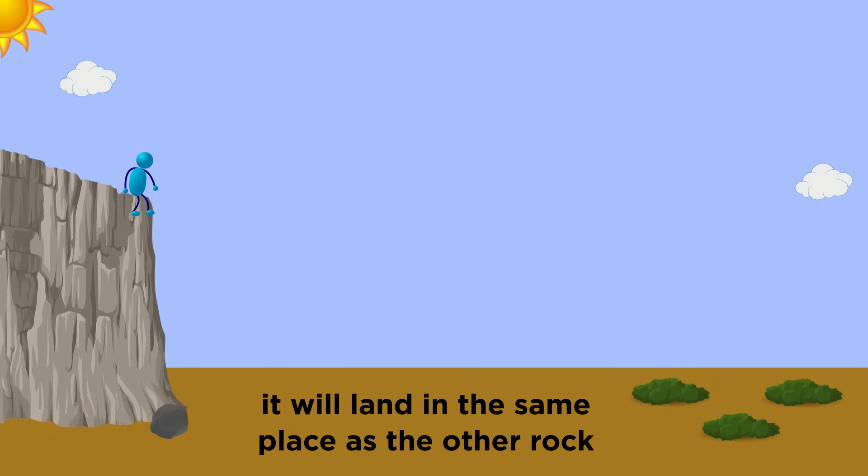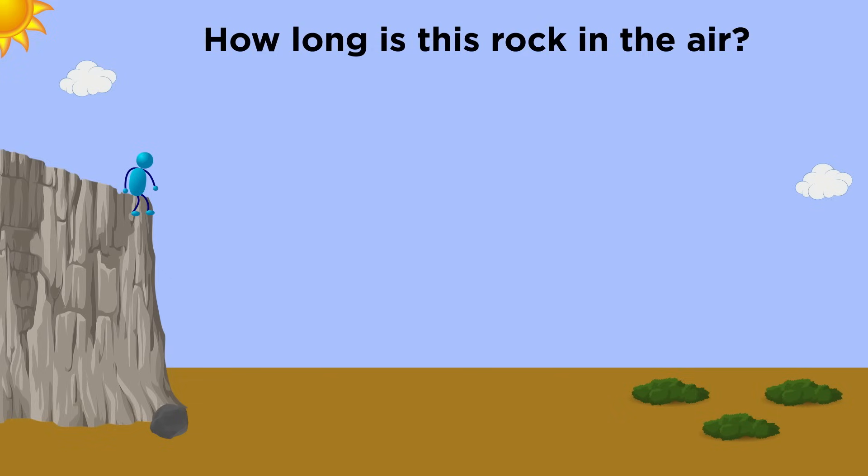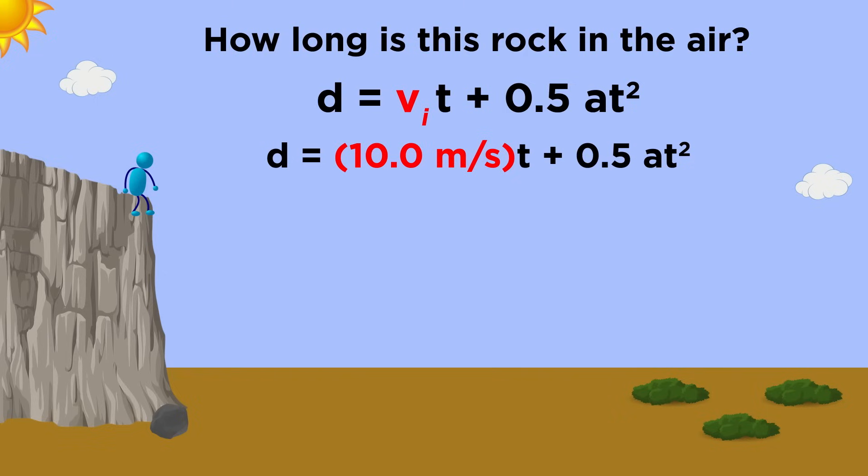How long will this rock be traveling before it lands? Well let's do the same calculation that we did before. The only difference here is that instead of an initial velocity of zero, we have an initial velocity of 10 meters per second in the positive direction, or upwards, and the usual acceleration, which again will be downwards and therefore negative.